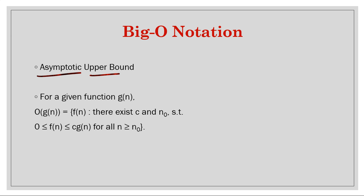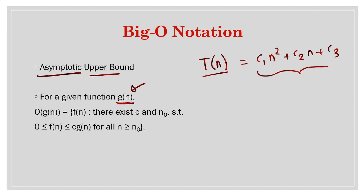We have a function g(n) that we are going to find. We are given the running time of an algorithm as a function of the input size — let's say c1·n² + c2·n + c3. We have to find what the Big O notation of this is, so this is the g(n) we are trying to find, and we will write O(g(n)).